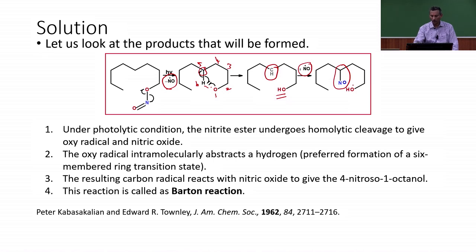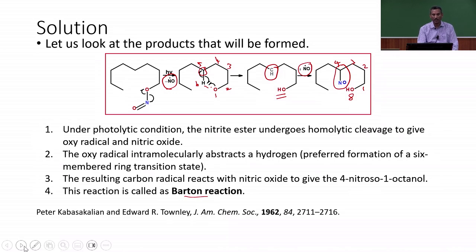The nitric oxide radical adds to this particular carbon atom and we end up with nitroso-octanol. There are eight carbon atoms present, so it is an octanol derivative, with the nitroso group at the 4-position (C1–C2–C3–C4). This compound is 4-nitroso-octanol, and this reaction is called the Barton reaction. The intermediate involved is the nitric oxide radical.